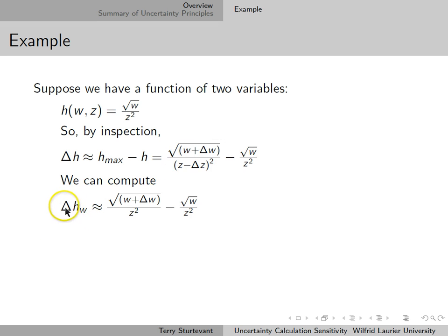We can compute the proportion of delta h that comes from w by setting delta z to zero, and we can compute the proportion of delta h that comes from z by setting delta w to zero.